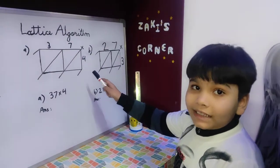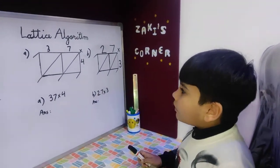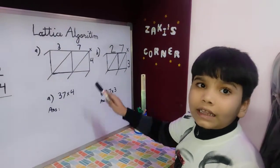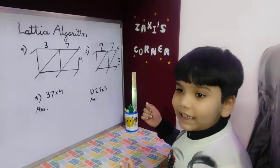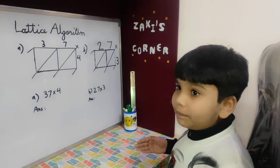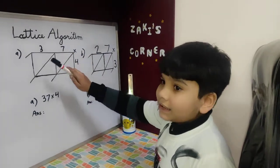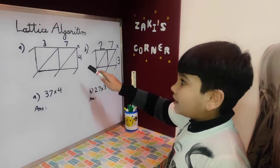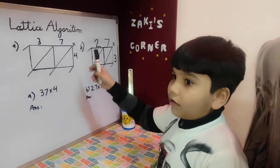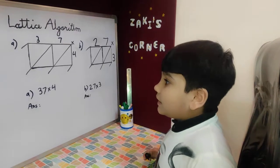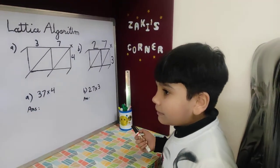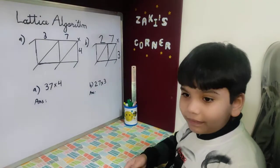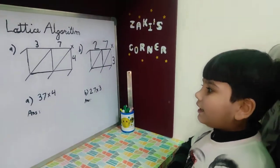Example number one: 37 multiply by 4. But before starting the example, we have to check the steps of using the lattice algorithm. Step one: set up the lattice. Step two: set up all the numbers — both the multiplicand and the multiplier. The multiplier should be on the right side of the lattice, and the multiplicand should be on the top of the lattice. Step three: multiply all the numbers. Step four: add the numbers. I hope that you understand all these steps.